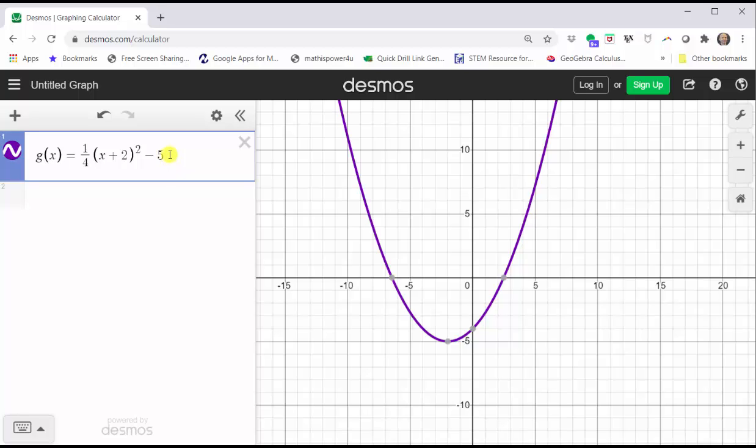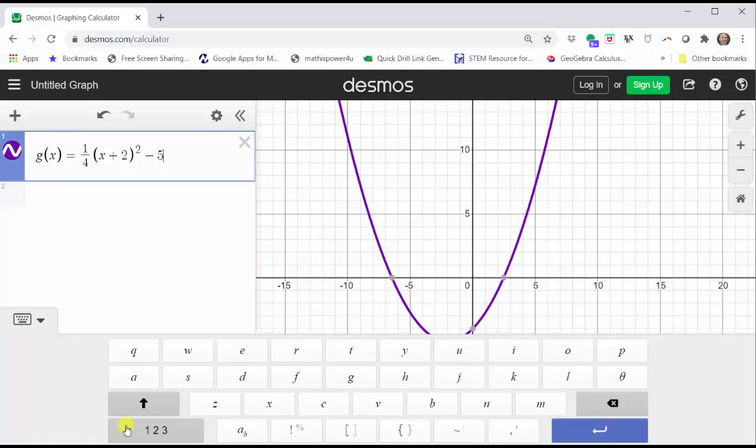We only want the graph when x is greater than negative two. Click to the right of g(x), enter curly brackets, enter the inequality x greater than negative two.